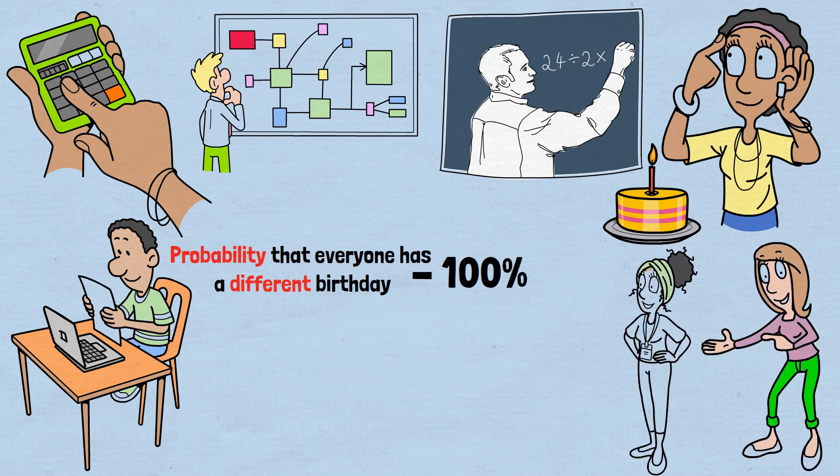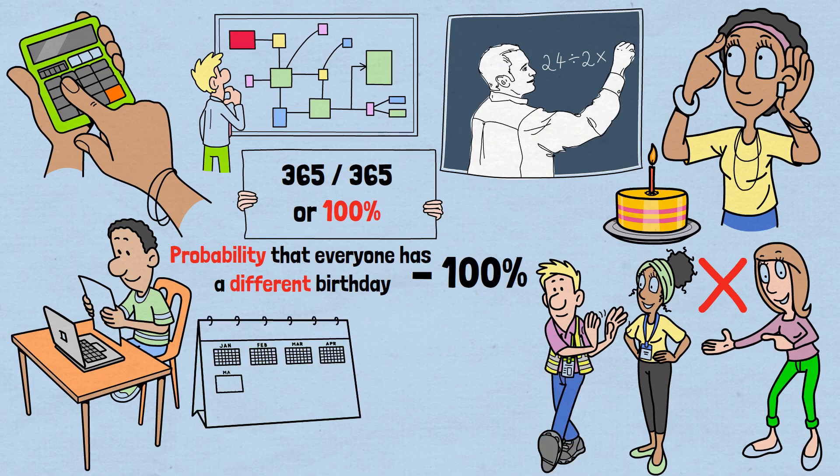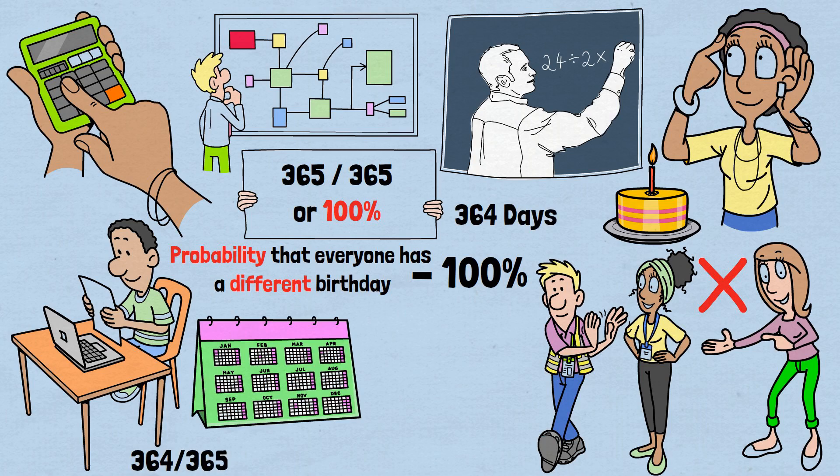The first person can have any birthday at all. There are no restrictions. So, their probability of having a unique birthday is 365 out of 365, or 100%. The second person needs to avoid the first person's birthday. They can have any of the remaining 364 days. So, their probability is 364 divided by 365, or about 99.7%. The third person needs to avoid both previous birthdays. Their probability is 363 divided by 365, or about 99.5%. This pattern continues.